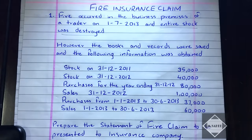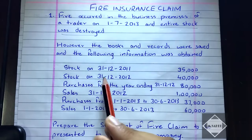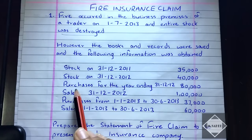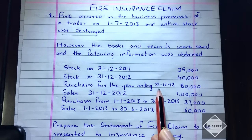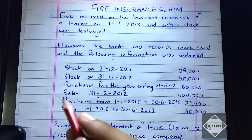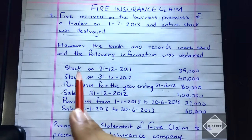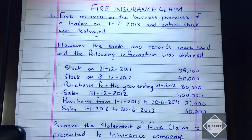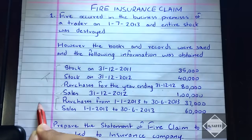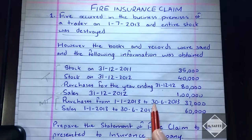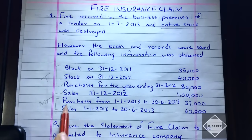The books and records were saved and the following information was obtained. Opening stock is 35,000 and closing stock is 40,000. Purchases and sales are for the year ending 31/12/2012 — these four go into the trading account. Purchases and sales for the current year up to the date of fire, 3/6/2013, go into the memorandum trading account.